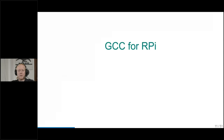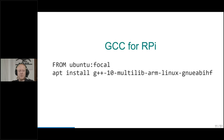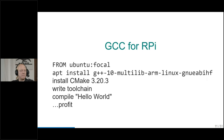So we take GCC for the first try for a Raspberry Pi project. We start with Ubuntu Focal, install our packages like the G++ package, install CMake, write a toolchain, compile our Hello World, and then we go home successful. Starting with Linux is easy, installing packages is easy, installing CMake is up to you. Then writing a toolchain — this is new and special for cross-compiling.